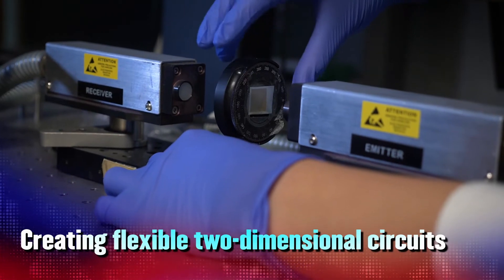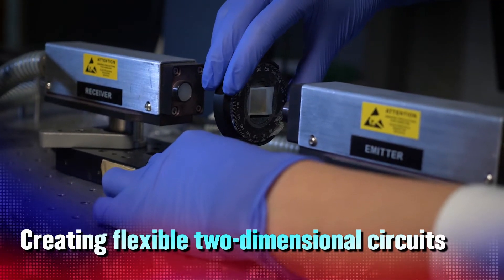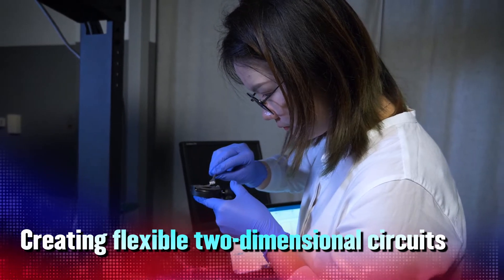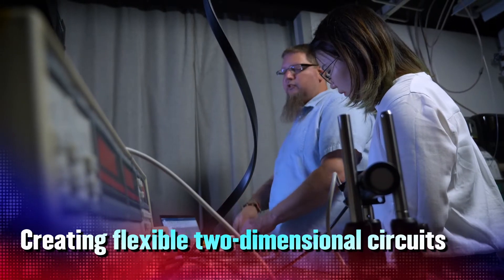What's really cool about it is that you deposit this layer down and then you can use a laser to write places where you basically change the electronic structure and you can make little two-dimensional circuits on a flexible substrate. These materials have some unique combinations of properties.